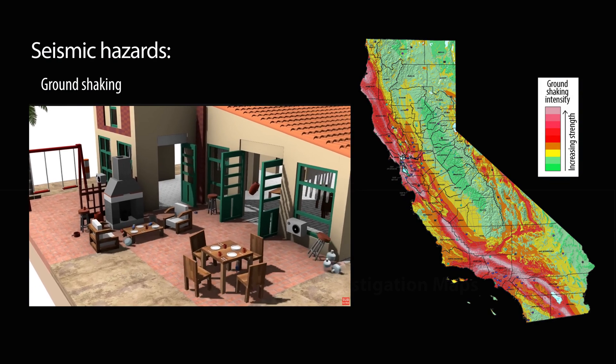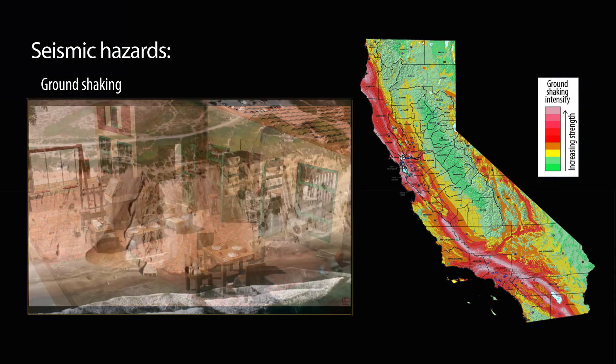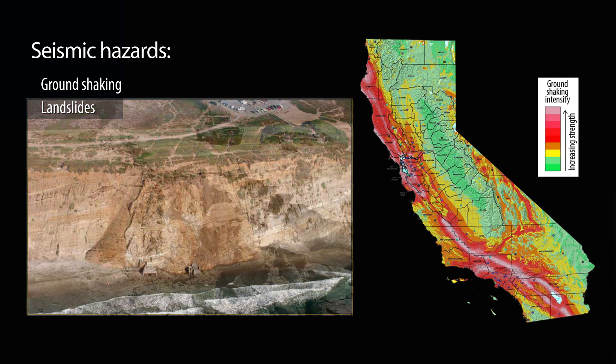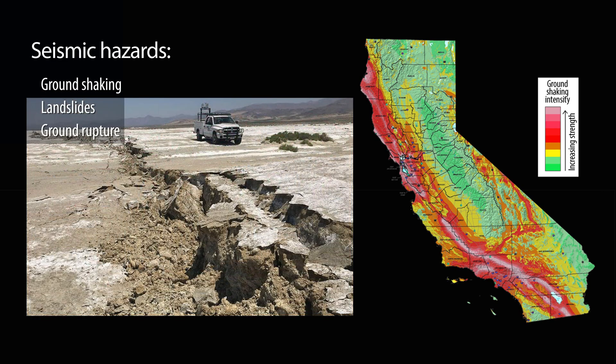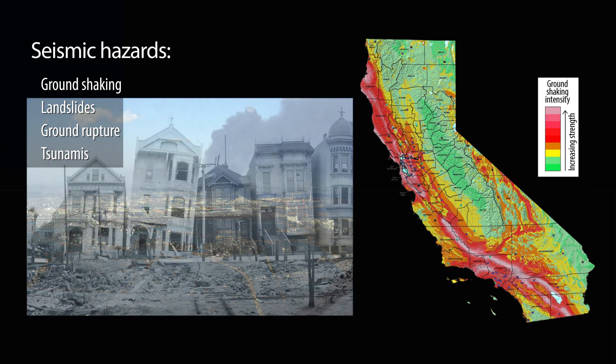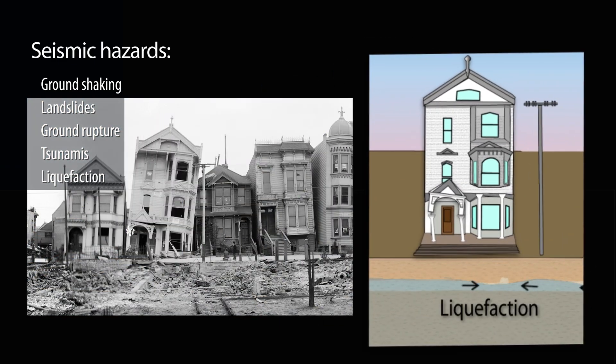Earthquakes don't just make the ground shake. They can cause a range of other hazards, including landslides, ground rupture, tsunamis, and liquefaction of wet sediments during ground shaking.